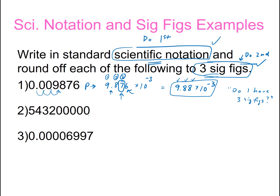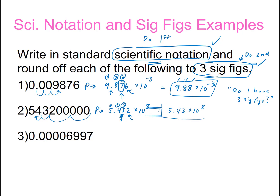Now this next one: counting places — three, there's six, seven, eight. Rewriting it: 5.432 times 10 to the eighth, since this is a large number with a positive exponent of eight. Our third sig fig is the 3. The decimal point is present, count from this side: one, two, three. The third sig fig is the 3, and the digit after it is lower than five, so we keep the 3 the same. Rewriting: 5.43 times 10 to the eighth, and I have three sig figs.